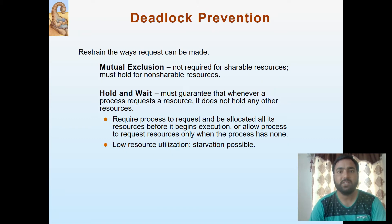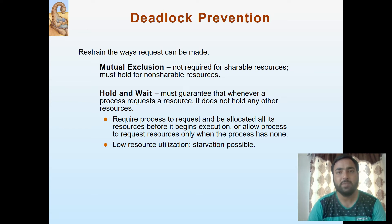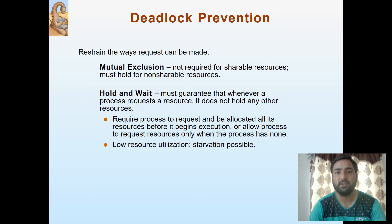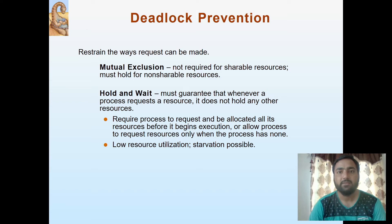Today, first we are discussing about deadlock prevention. Deadlock can be prevented by simply avoiding whatever the necessary and sufficient conditions for deadlock are — the conditions that we have discussed in the earlier video. Those conditions must be avoided to prevent deadlock from happening in the system. Let's see these conditions one by one.